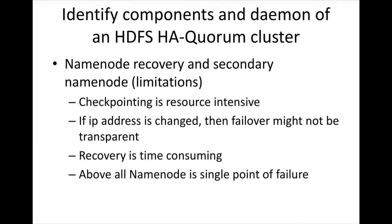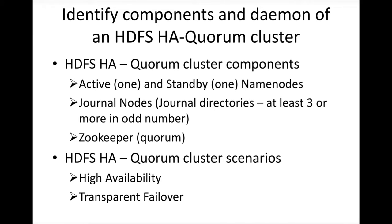We need to mitigate these issues. As part of Hadoop 2, they introduced a concept called HDFS HA. Instead of having a name node and a secondary name node, as part of Hadoop we will have an active and a standby name node. There will also be something called journal nodes or shared edit log directories, and we need to have ZooKeeper to handle the split-brain scenario and make sure failover happens transparently.